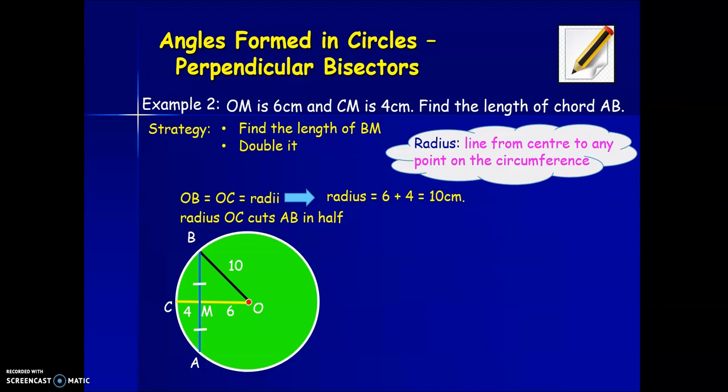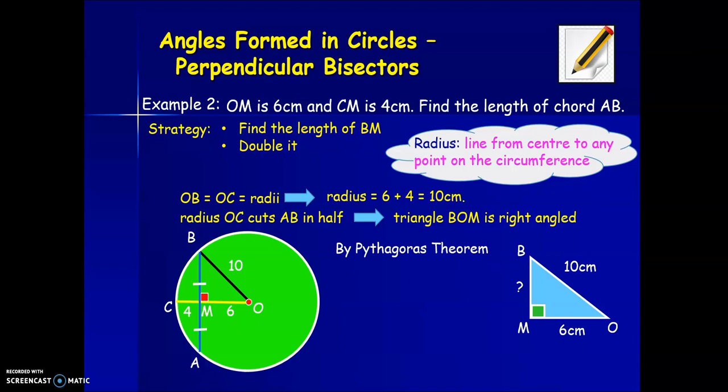Radius OC cuts the chord AB in half. So therefore, that tells us we have a right-angled triangle. BOM is a right-angled triangle. If we take that triangle to the side and fill in what we know, we know that BO is ten centimeters and MO is six centimeters. And we want to find the length of BM. So again, we have a right-angled triangle. We know two sides and we want to know the third side. So our method is Pythagoras. And again, it's a subtract version because the longest side, the hypotenuse, is already known. That's opposite the right angle and it's ten centimeters.